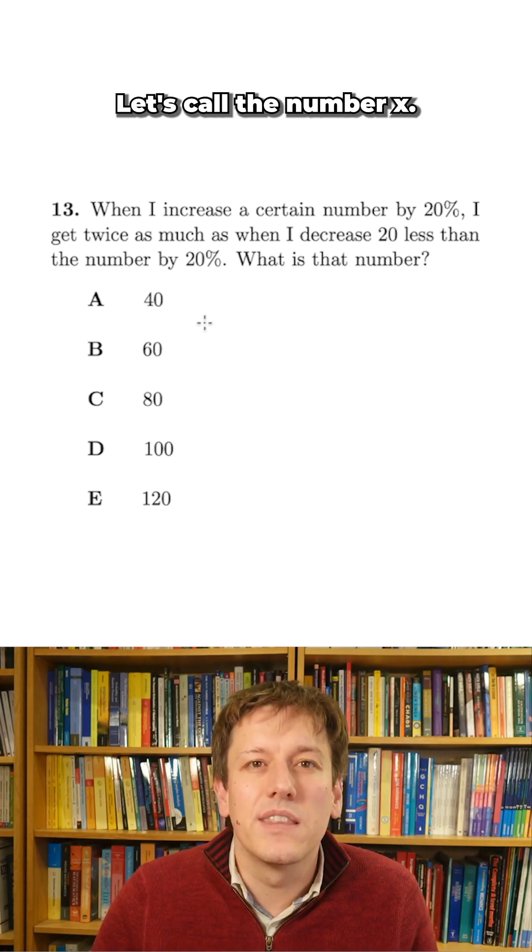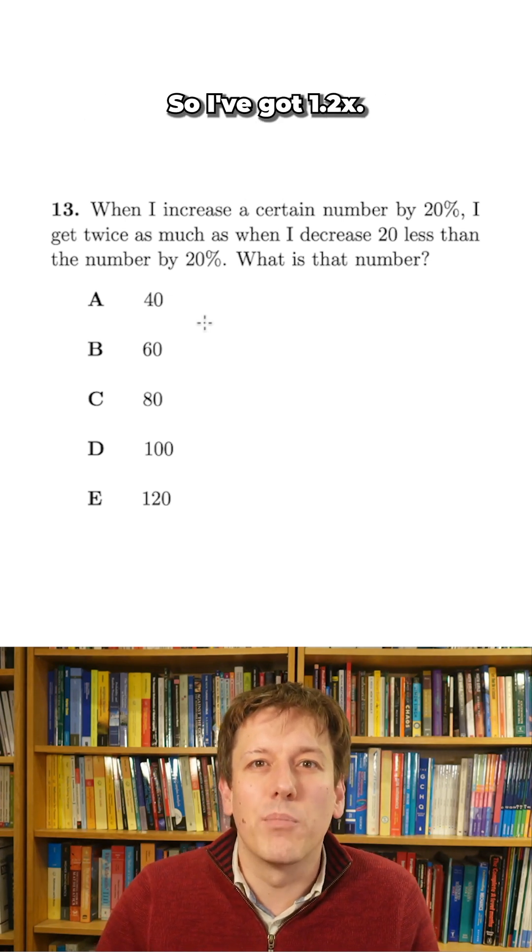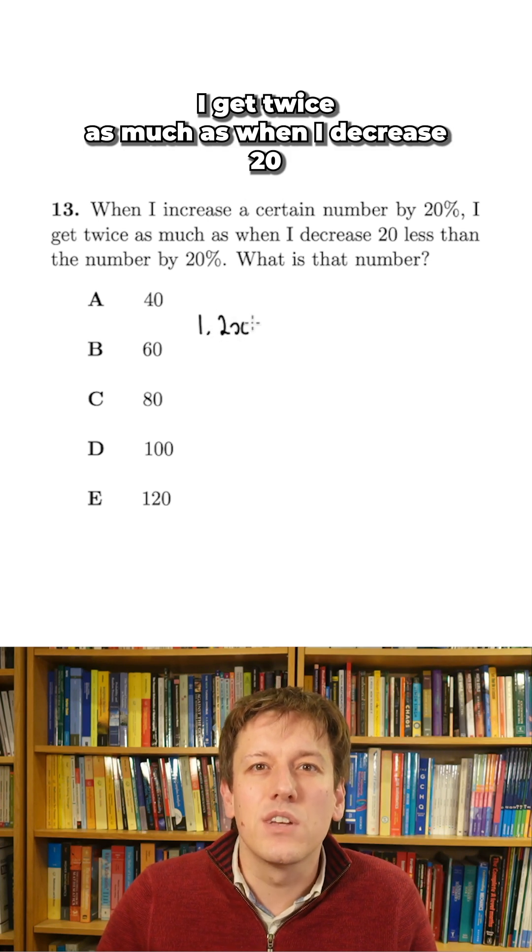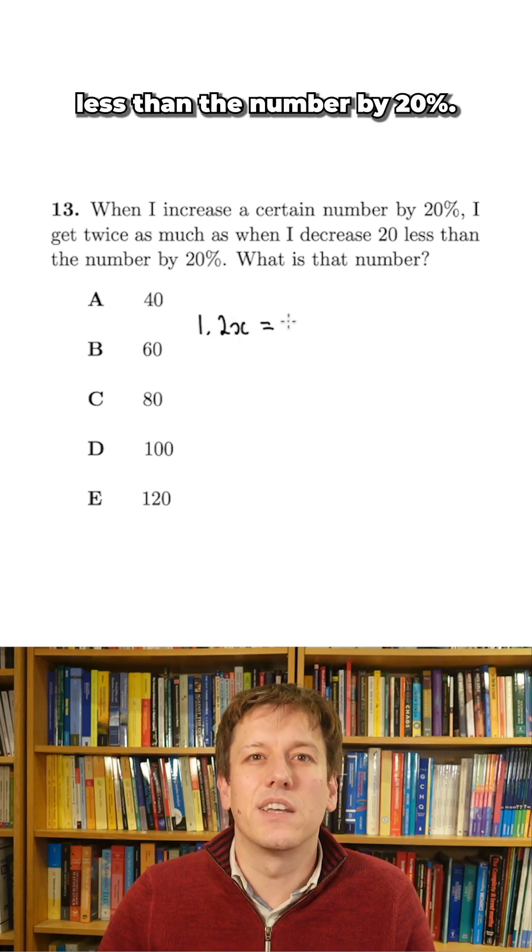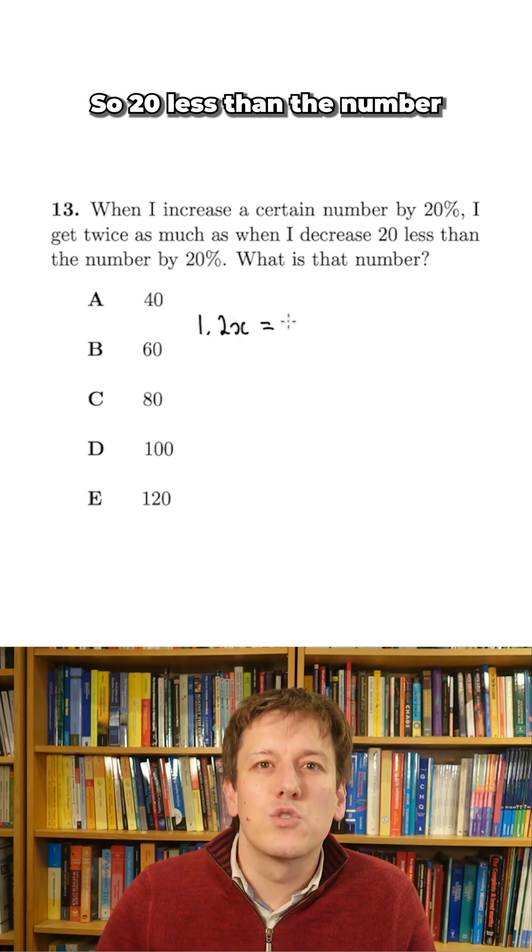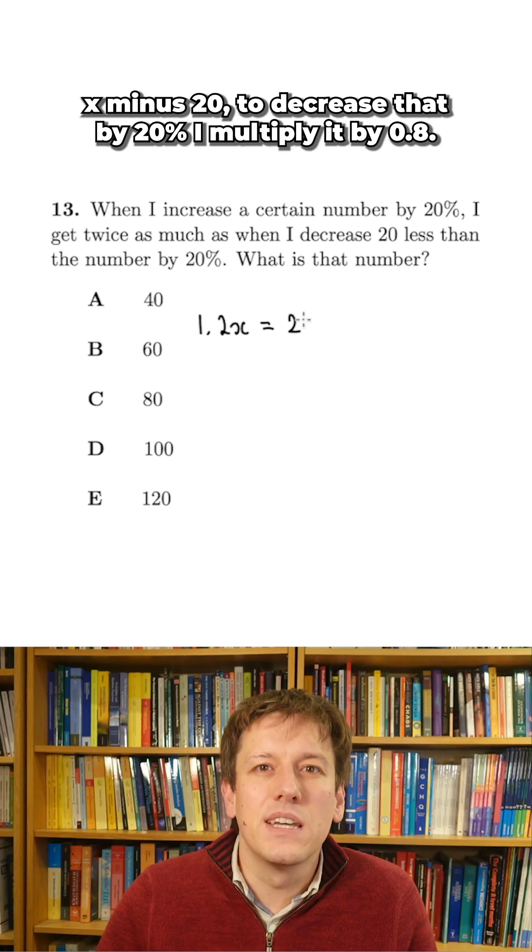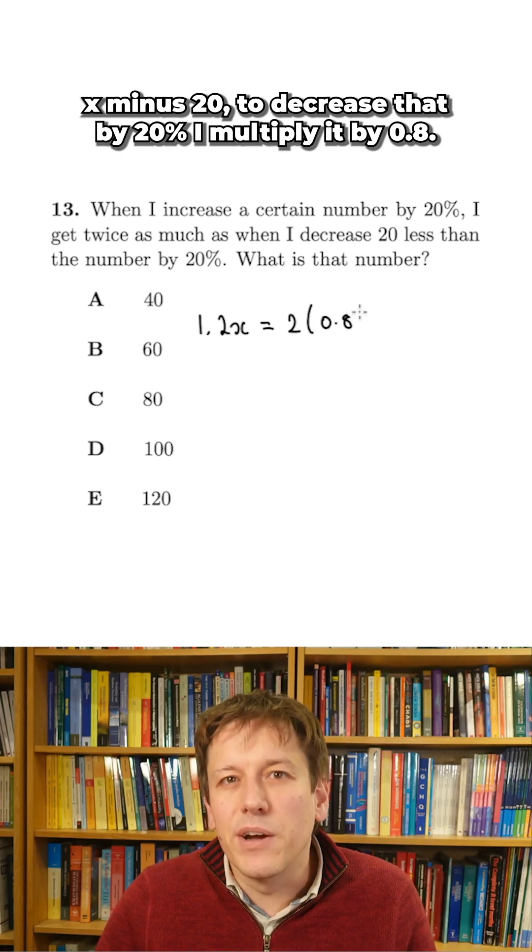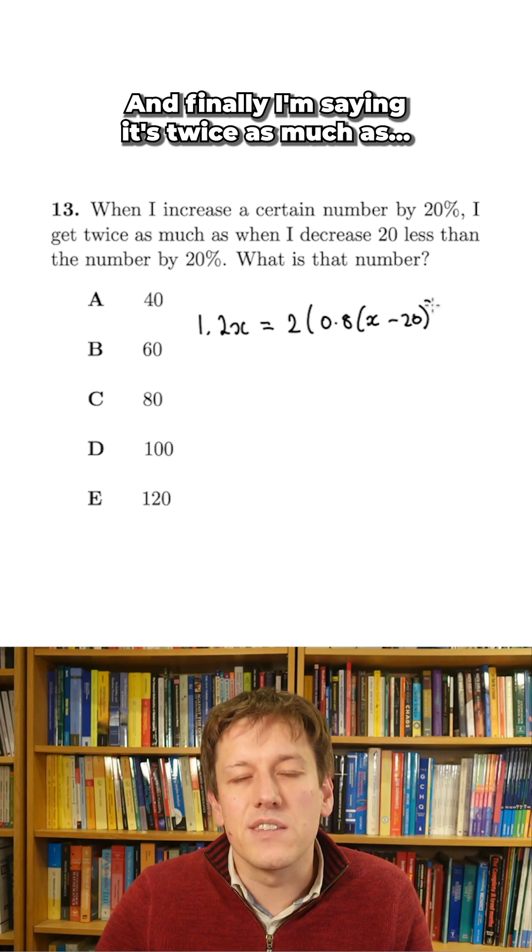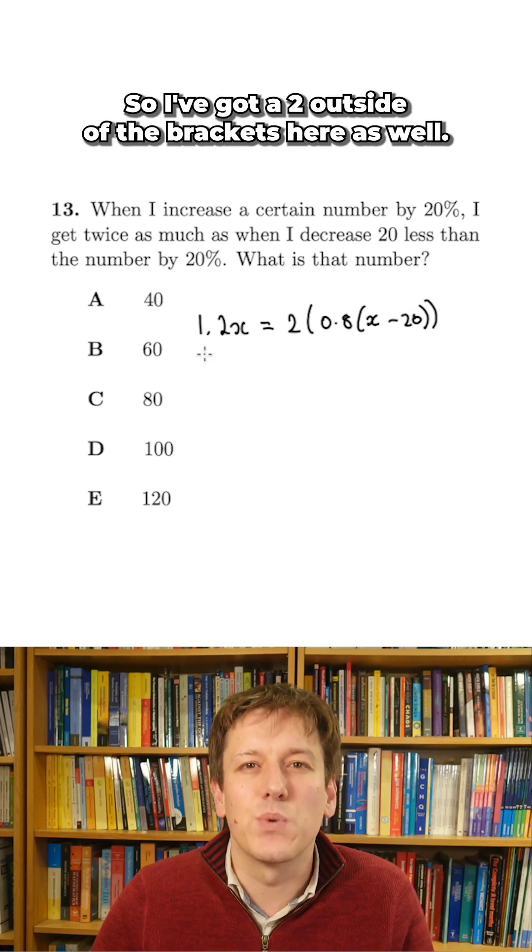I increase the number by 20%. Let's call the number x. So I've got 1.2x. I get twice as much as when I decrease 20 less than the number by 20%. So 20 less than the number is x minus 20. Decrease that by 20%. I multiply it by 0.8. And finally, I'm saying it's twice as much as. So I've got a 2 outside of the brackets here as well.